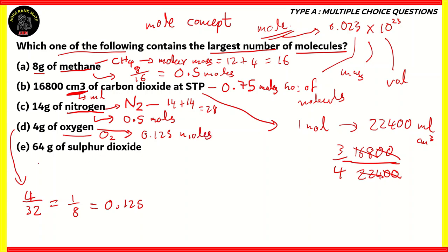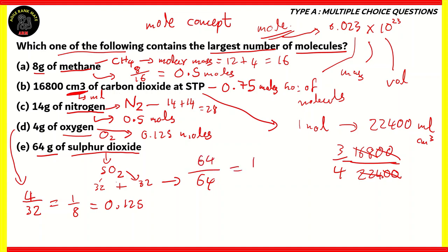Finally, option E: 64 grams of sulfur dioxide. Sulfur dioxide's formula is SO₂. Sulfur has a mass of 32, and O₂ also has a mass of 32, giving a molar mass of 64. Since we have 64 grams, dividing by 64 gives us 1 mole. Therefore, the correct answer is option E — 64 grams of sulfur dioxide. We calculated the moles for all options, and the one with the highest number of moles gives the largest number of molecules.